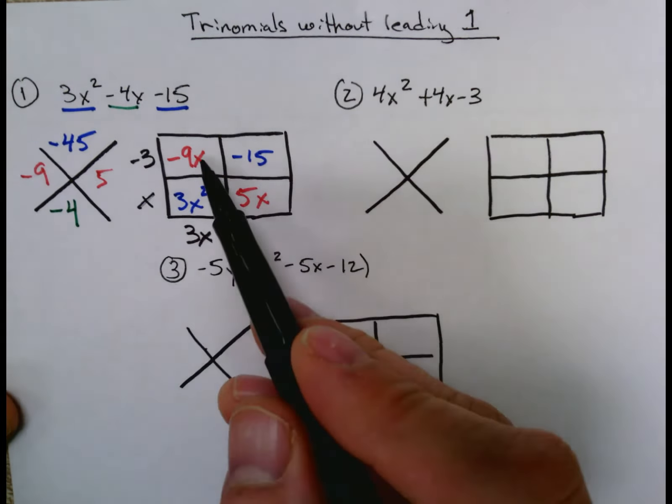For your second example, starting off with the 4x² and -3, same idea. 4x² down here, -3 on top. That tells us that we have a -12 in the top of our diamond problem. Positive 4x, so we put a 4 down here.